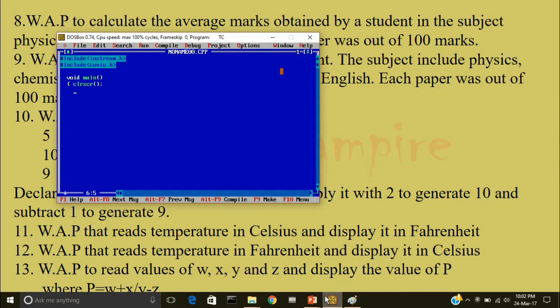Then we'll write void main parenthesis clear screen. Now we have to declare a variable called int a and it is initialized to 5.